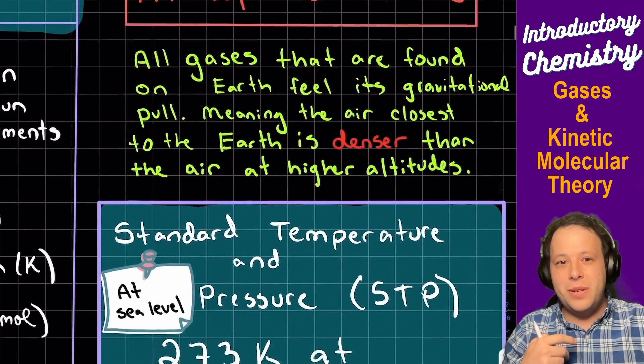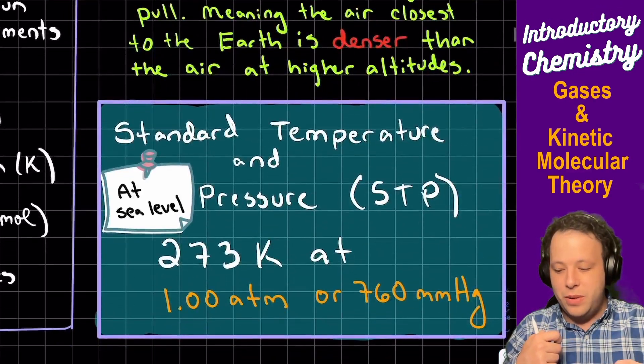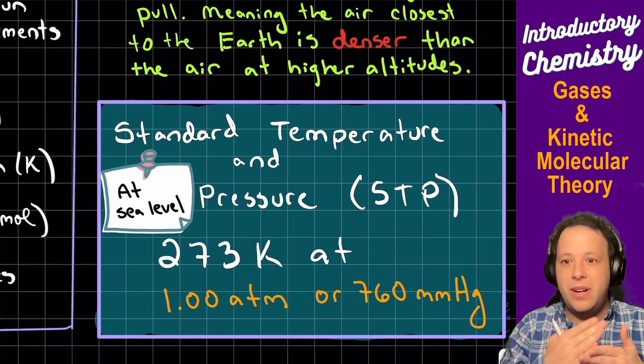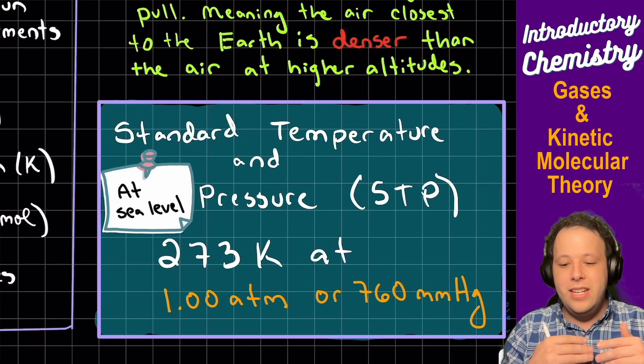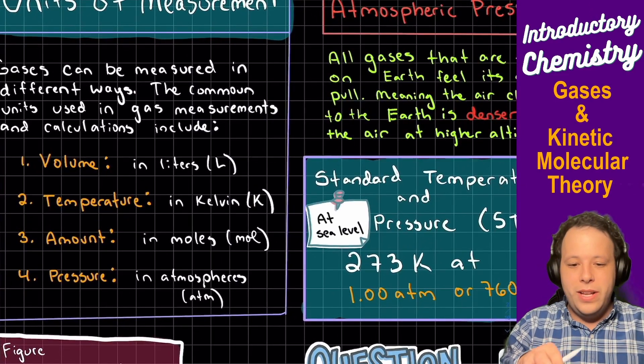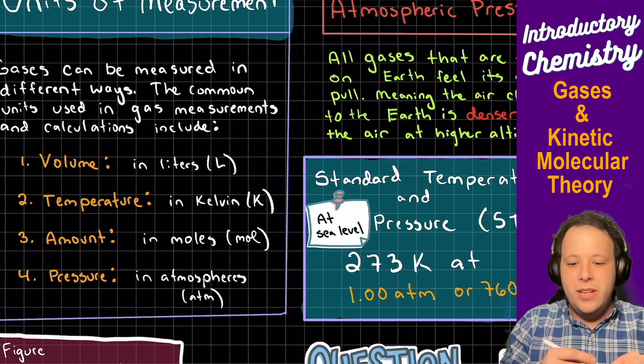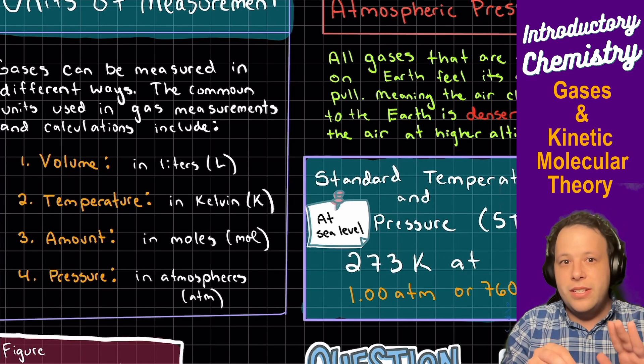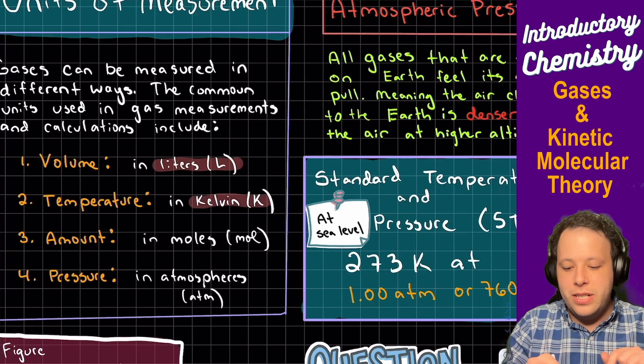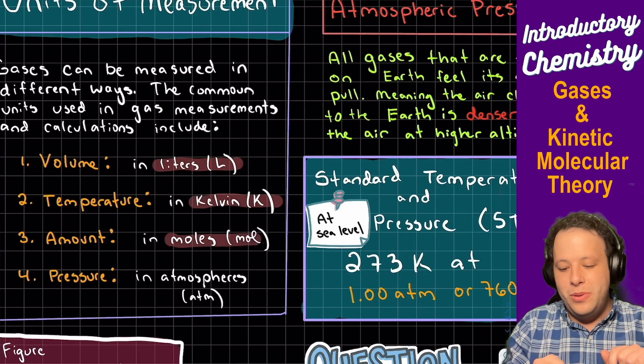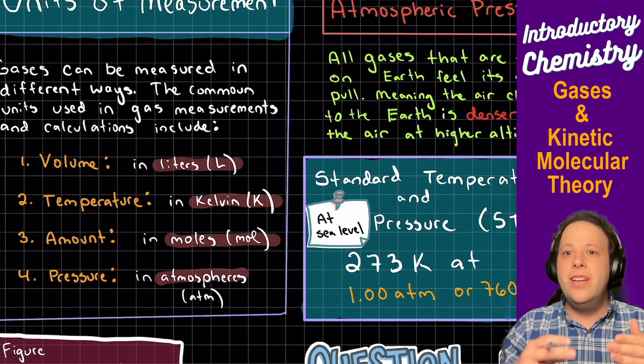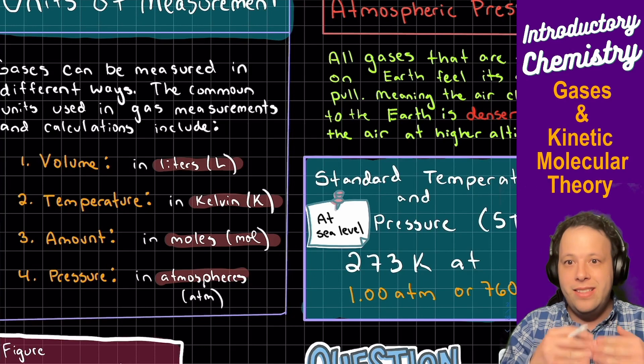So we're going to be using a couple different things as well that are some standards. Yes, you have pressure and volume and these different units, but for a lot of these what we're going to be looking at is when we are measuring them, we want to stick into four common units: you always want your volume to be in liters, temperature to be in Kelvin, moles in moles, and pressure in atmospheres. And there's many different units that can be used, but for these videos we're going to stick to these four.